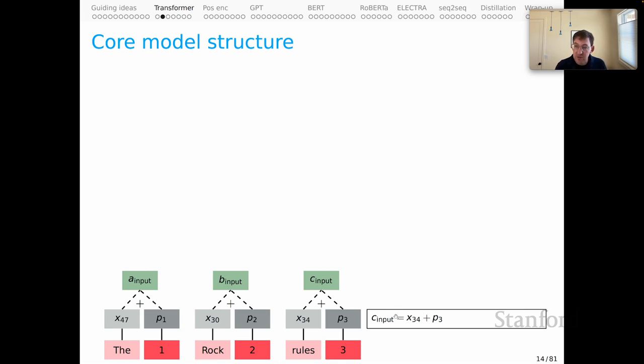On the right here, I've depicted that calculation for the C input part of this sequence, and that's a pattern that I'm going to continue all the way up as we build this transformer block, just showing the calculations for the C dimension, because the calculations are entirely parallel for A and for B. So to get C input, we simply add together x34 with P3, and that gives us C input.